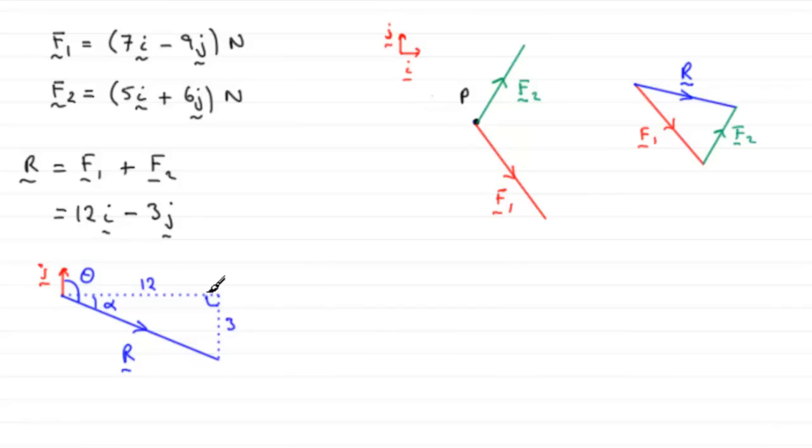We know that the tan of alpha compares the opposite side to the adjacent, that'd be 3 to 12, 3 over 12 or a quarter. So to work out alpha we just need to do the inverse tan...